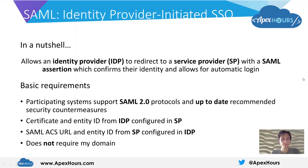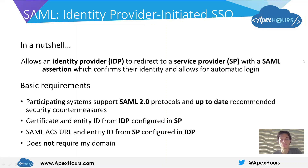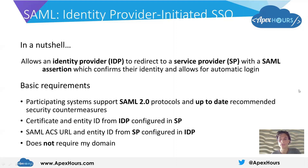We need the SAML assertion consumer service URL from the service provider to be configured within the identity provider, and also the unique entity IDs — a URL format unique identifier for the service provider — to be set up in the identity provider, so assertions are sent to the right place. They're sent to the assertion consumer service URL and are marked as being specific to the service provider through the entity ID.